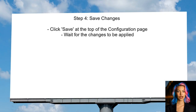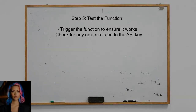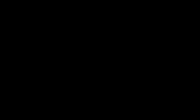After adding the API key, save the changes. This step is crucial to ensure that the function app recognizes the new setting. Finally, test your function to confirm that it can now access the SendGrid API key without any issues.